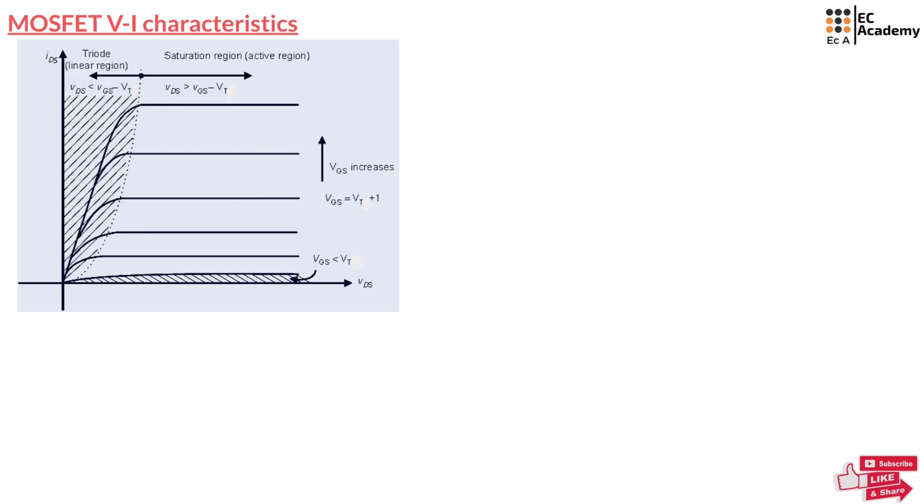The metal oxide semiconductor field effect transistor comes in two main types: first, N channel, and second, P channel. This diagram shows the VI characteristics of the MOSFET. The VI characteristics describe how the drain current IDS varies with respect to the applied voltage VDS and also the voltage VGS.